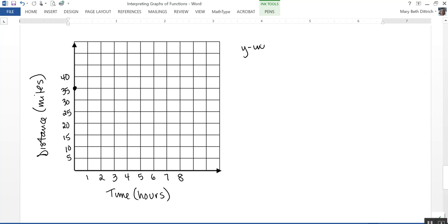So my y-intercept is 35. That means they started 35 miles out from the shore. My x-intercept is 7. That's going to be this point right here. And what that means is that it takes them 7 hours to return. This graph then is going to look something like this. I don't know how well I drew that. That's not too bad. There we go. Okay.